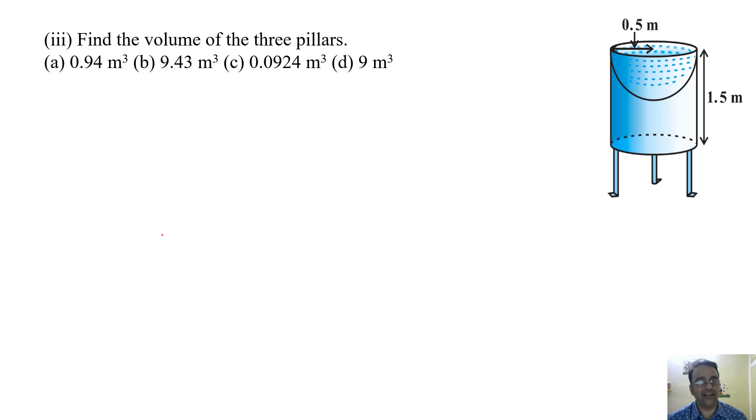So formula is πr²h. Three pillars are there, so 3 × πr²h. And the value of π is 22 by 7. Radius is given 7 centimeter, so we have to convert it into meter, 7 by 100. And the height is given 2 meter.